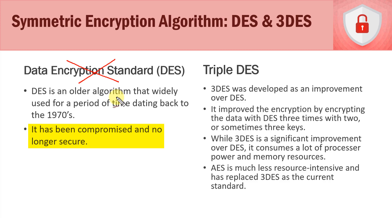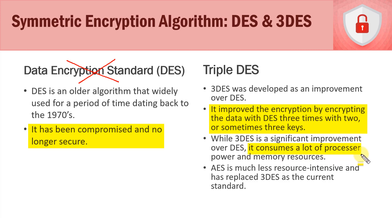To improve over DES, Triple DES was developed. It improves DES by encrypting data with DES three times, using two or even three different keys to make it more secure. However, even though it made a significant improvement over DES, Triple DES consumes a lot of processor power and memory resources due to its multiple rounds of encryption with potentially multiple keys.